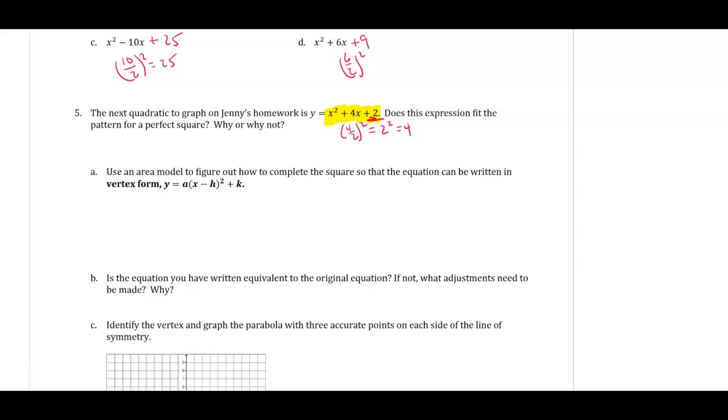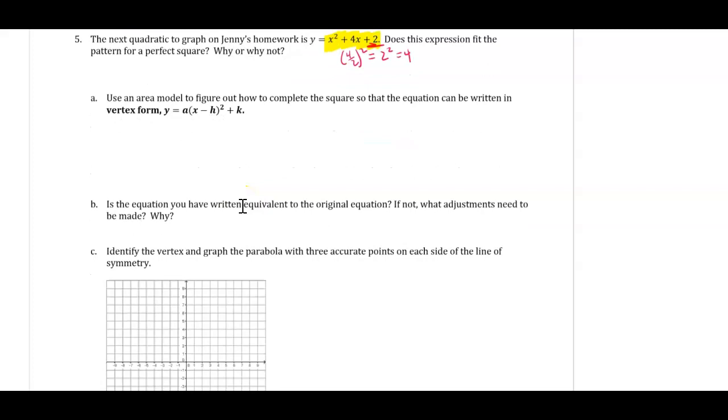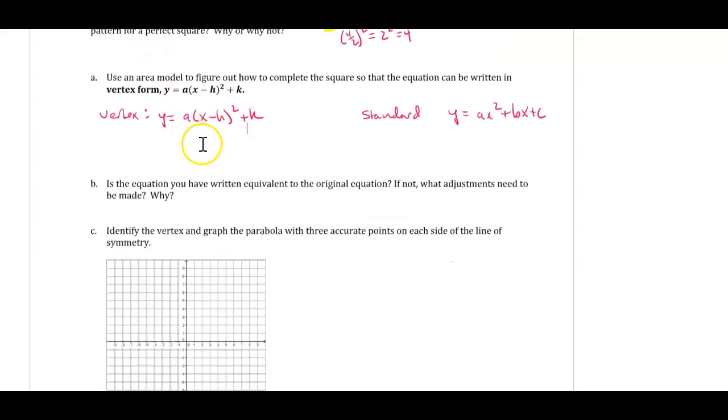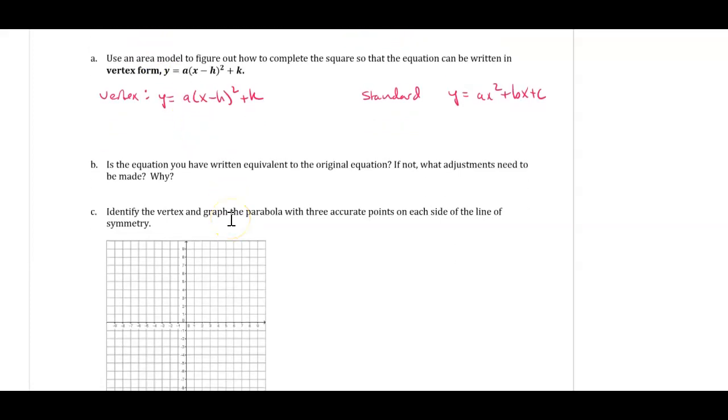So it says here, use an area model to figure out how to complete the square so that it can be written in vertex form. So again, we have two forms here. One form is vertex form, and the other one is standard form. Standard is y equals ax squared plus bx plus c. Vertex form is y equals a times (x - h) all squared plus some k. Is the equation you have written equivalent to the original equation? If not, what adjustments need to be made and why?